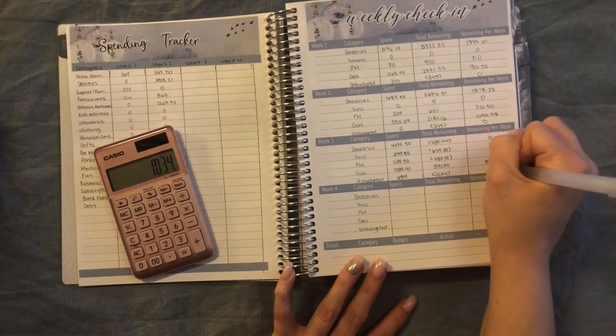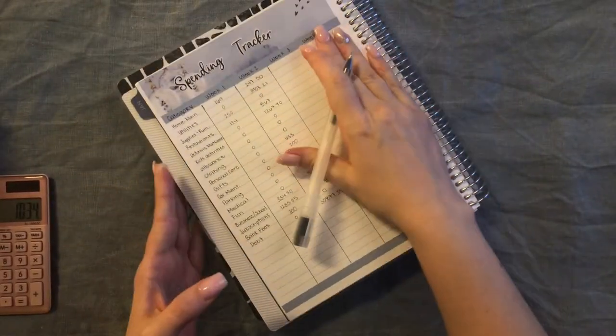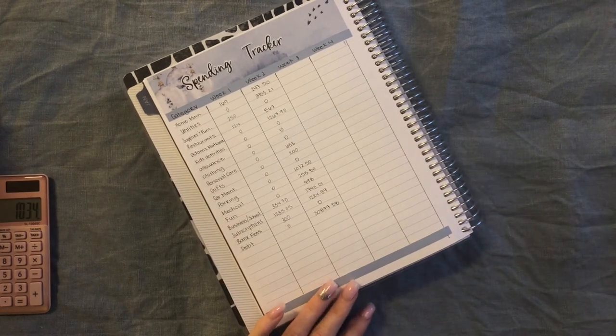So that is our weekly check-in for the main categories. Now I'm just gonna flip over and do our other spending tracker categories.